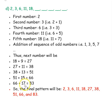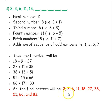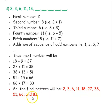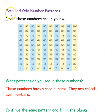Then we add 15: 51 plus 15 is 66. Then we add 17: 66 plus 17 is 83. So the pattern will be 2, 3, 6, 11, 18, 27, 38, 51, 66, and 83.